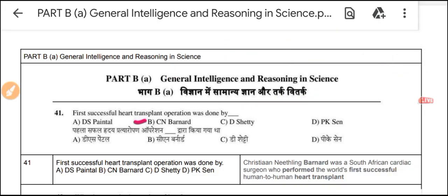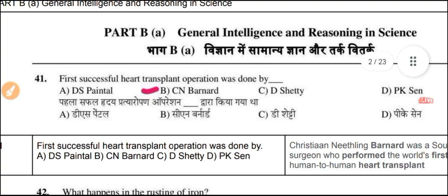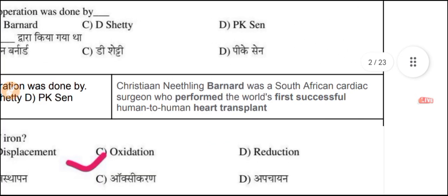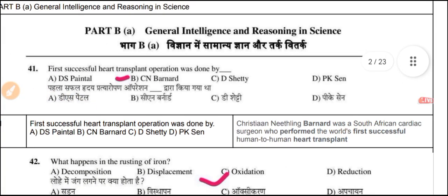Question 41 from the 2022 examination paper: The first successful heart transplant operation was done by CN Barnard. The correct answer is CN Barnard. Christian Barnard was a South African cardiac surgeon who performed the world's first successful human heart transplant. This is a very important biology question.